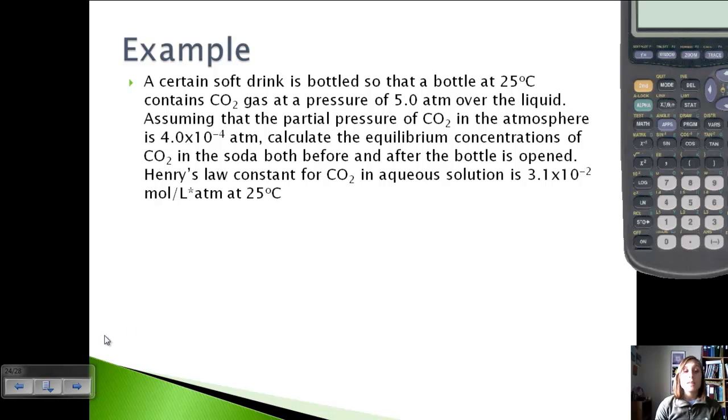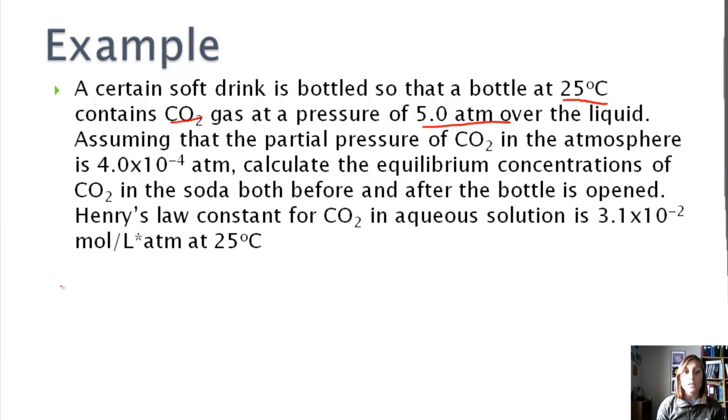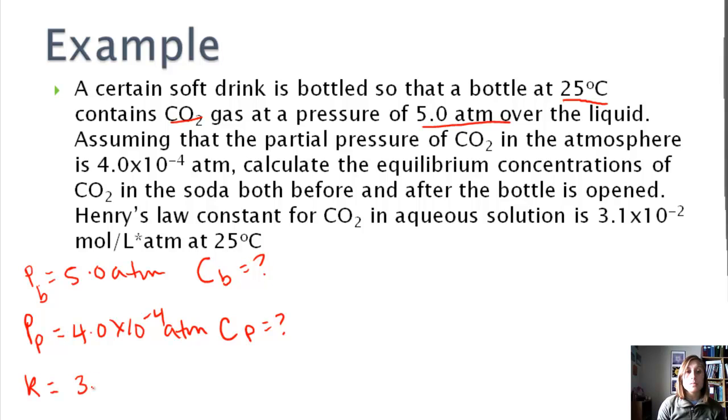Okay, so let's look at an example using Henry's Law. Okay, so it says a certain soft drink is bottled so that a bottle at, so we've got a temperature of 25 Celsius, contains CO2 gas at a pressure of 5 atmospheres over the liquid. So I'm going to put P equals 5 atmospheres. Assuming that the partial pressure of CO2 in the atmosphere, so this is bottled, partial pressure is 4 times 10 to the negative 4 atmospheres. So we have two different pressures. Calculate the equilibrium concentrations of CO2 in the soda both before and after the bottle is opened. So we want concentration at bottling and concentration at regular pressure or after. That also tells us that Henry's Law constant for CO2 in aqueous solution is 3.1 times 10 to the negative 2 moles per liter atmosphere at 25C, and that's where everything else is at, so we're good there.